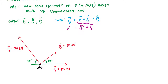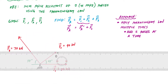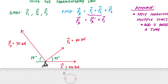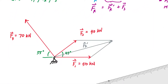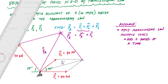Then I'll take that vector FR prime and add F3 to get the total resultant FR. In a nutshell: add two forces at a time. First create a parallelogram with F1 and F2 to find FR prime, then create a parallelogram with FR prime and F3 to find the total force resultant.